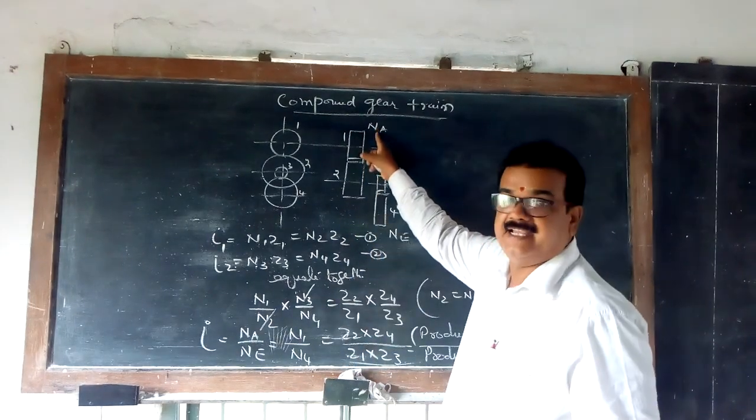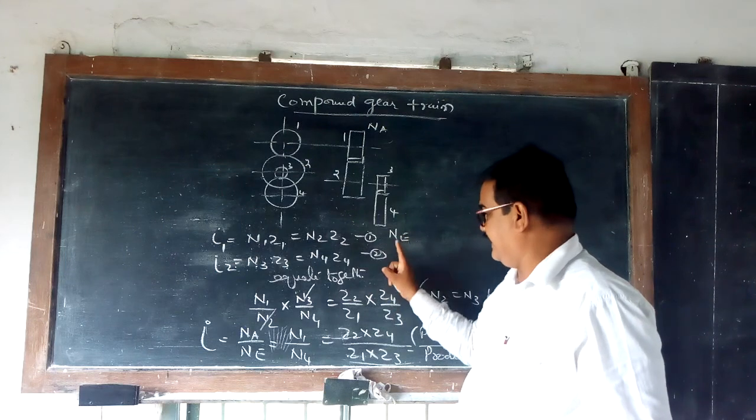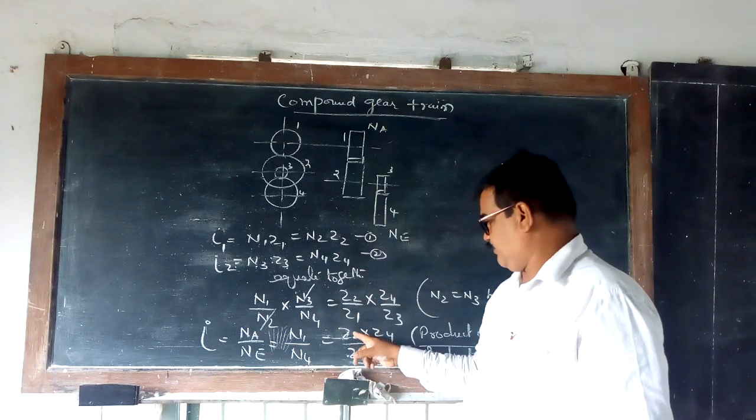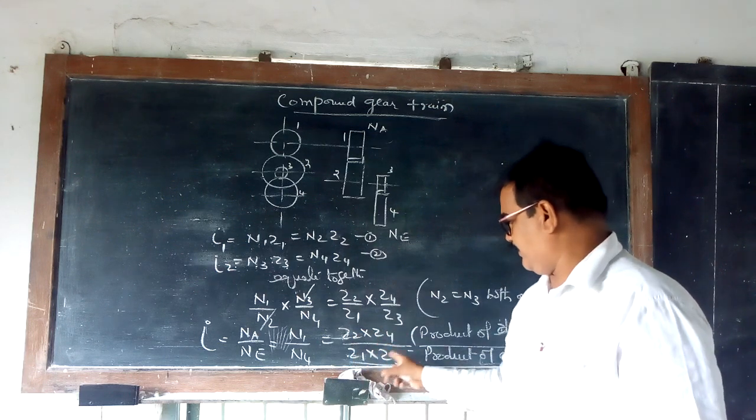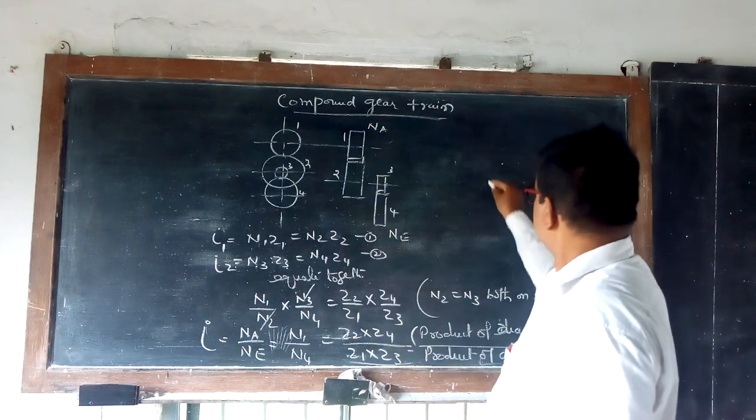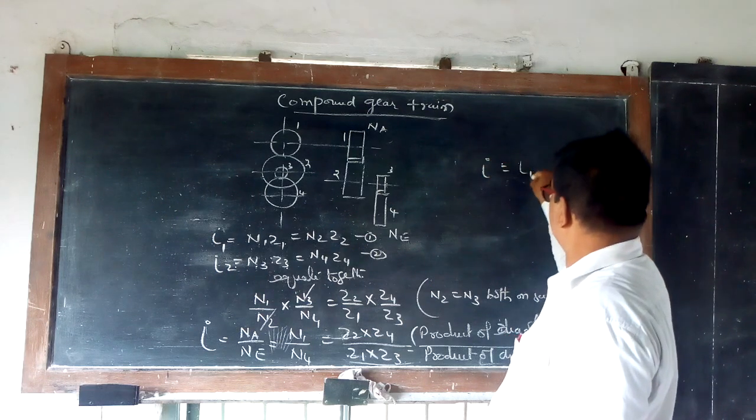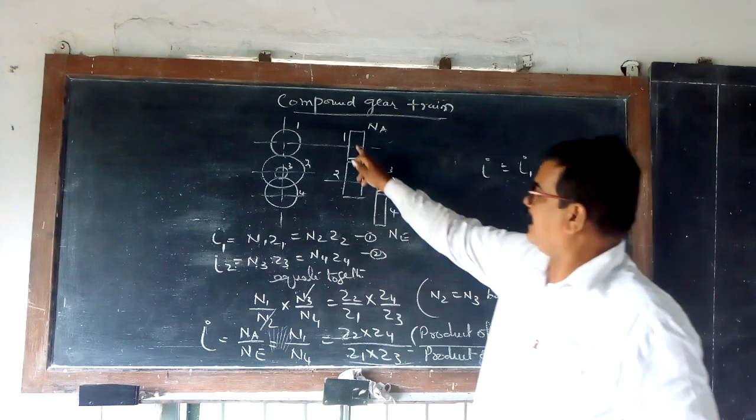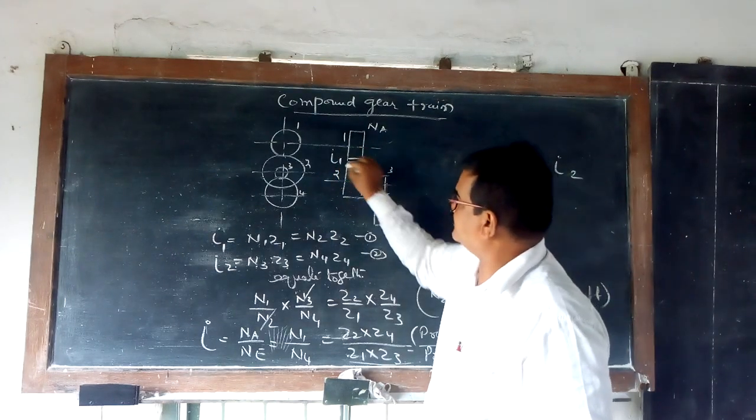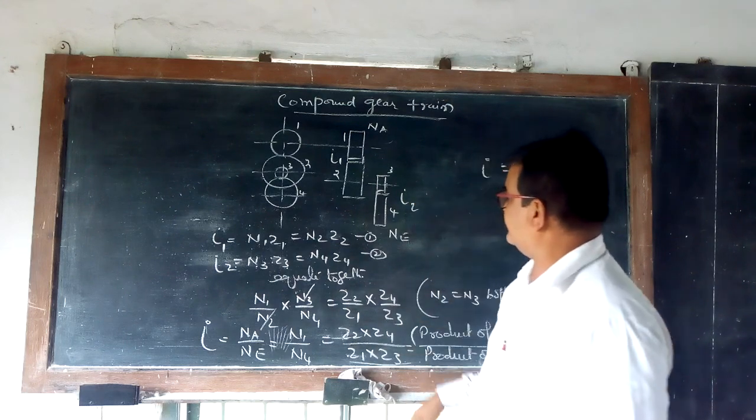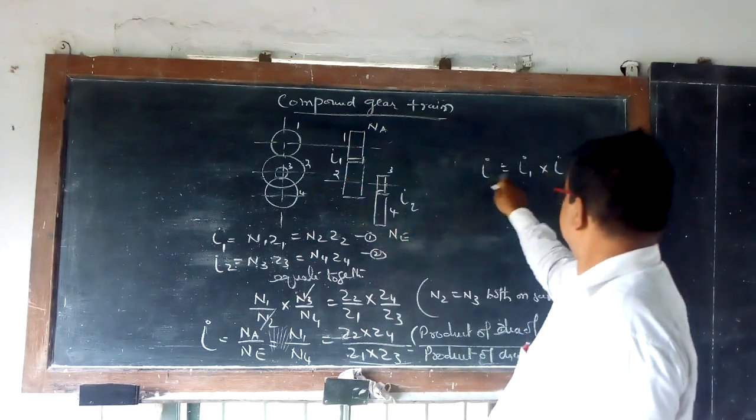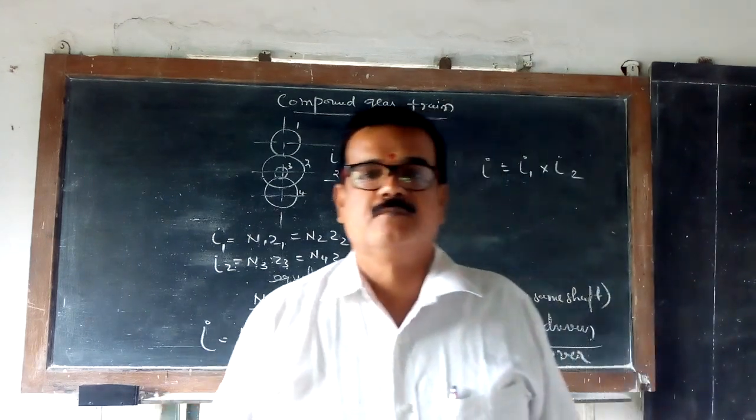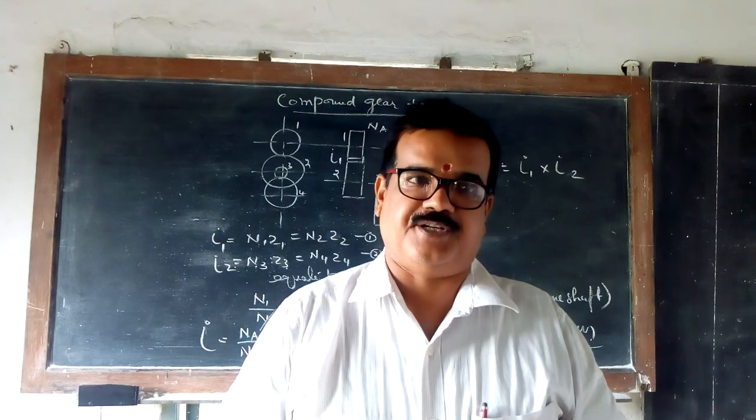First gear is called as NIA, last gear is called as NIE. So NIA by NIE is equal to N1 by N4 is equal to Z2 into Z4 divided by Z1 into Z3. Here this I can be calculated. It is a product of two ratios, I1 and I2. So total I1 into I2, by that method also you can calculate the transmission ratio.